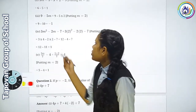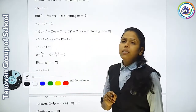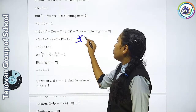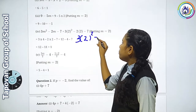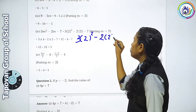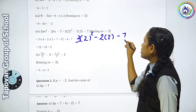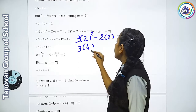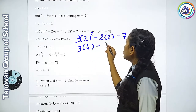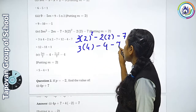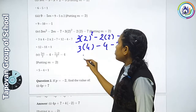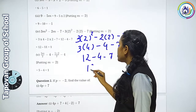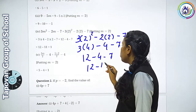अब Fourth number देखते हैं: 3m²-2m-7. यहाँ पर 3 terms हैं। तो 3×(2)²-2×2-7. 2 का square 4, 3×4=12, 2×2=4. 12-4-7=12-11=1. Answer 1 आया।